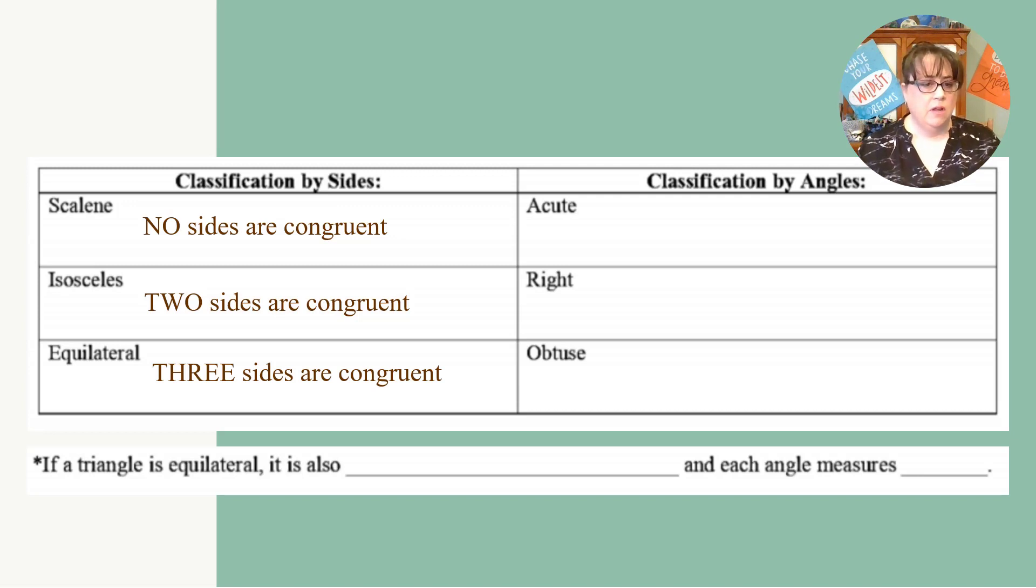As a side note, if a triangle is equilateral, it is also called equiangular, which means all angles are congruent, and each angle measures 60 degrees.